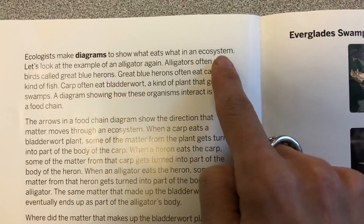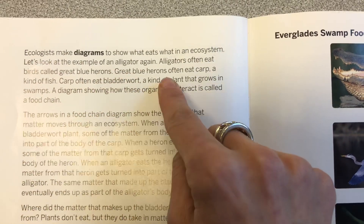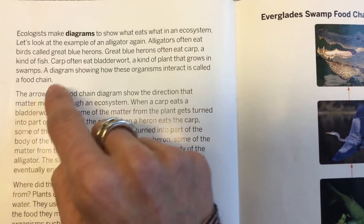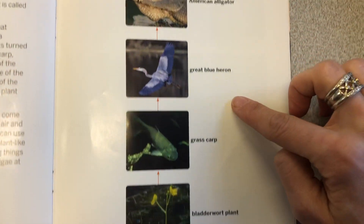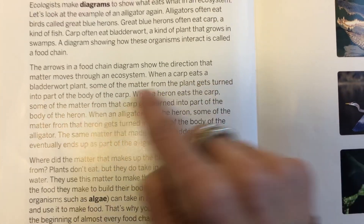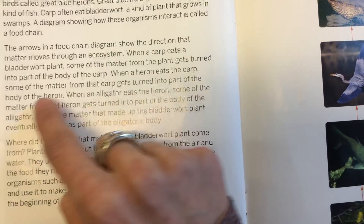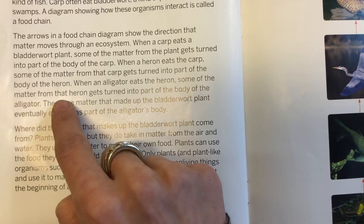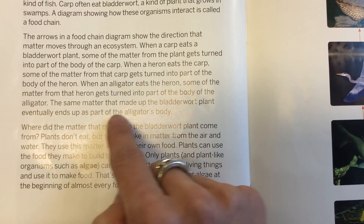Ecologists make diagrams to show what eats what in an ecosystem. Let's look at the example of an alligator again. Alligators often eat birds called great blue herons. Great blue herons often eat carp, a kind of fish. Carp often eat bladderwort, a kind of plant that grows in swamps. A diagram showing how these organisms interact is called a food chain. The arrows in a food chain diagram show the direction that matter moves through an ecosystem. When a carp eats a bladderwort plant, some of the matter from the plant gets turned into a part of the body of the carp. When a heron eats the carp, some of the matter from the carp gets turned into part of the body of the heron. When an alligator eats the heron, some of the matter from the heron gets turned into a part of the body of the alligator.